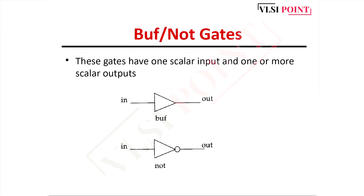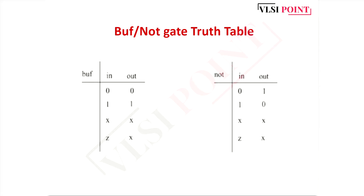Now we study the buff/not gates, which is the second category of basic gates. They have one scalar input and one or more scalar outputs. For buffer and not gate, you can see the symbols - the only difference is the bubble. In the not gate we have a bubble; in the buffer gate there is no bubble. Truth tables are there, and in the not gate we get inverted output.